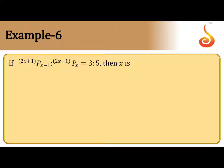So let us write this in ratio form: 2x plus 1 Px minus 1 by 2x minus 1 Px equals 3 by 5. Cross multiply: 5 into 2x plus 1 Px minus 1 equals 3 into 2x minus 1 Px.